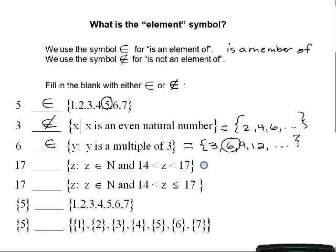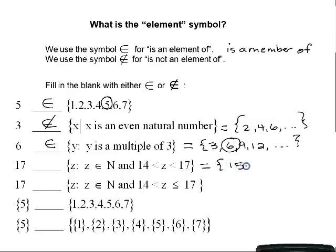The next question is: is 17 an element of the set of all x such that x is a natural number and x is between 14 and 17? The natural numbers strictly between 14 and 17 are 15 and 16. So 17 is not an element of this set.